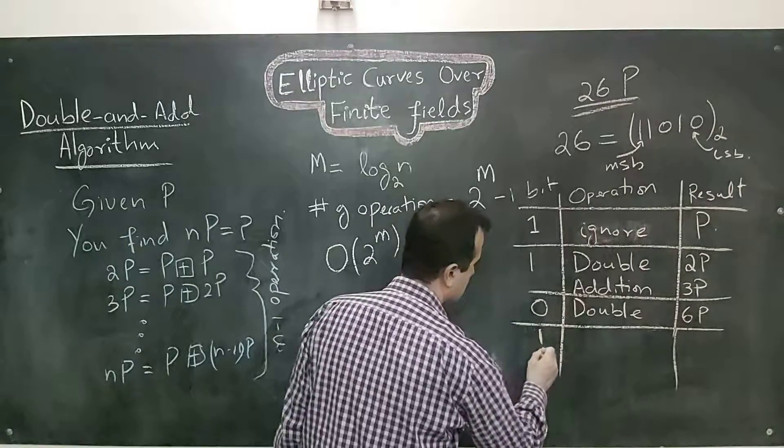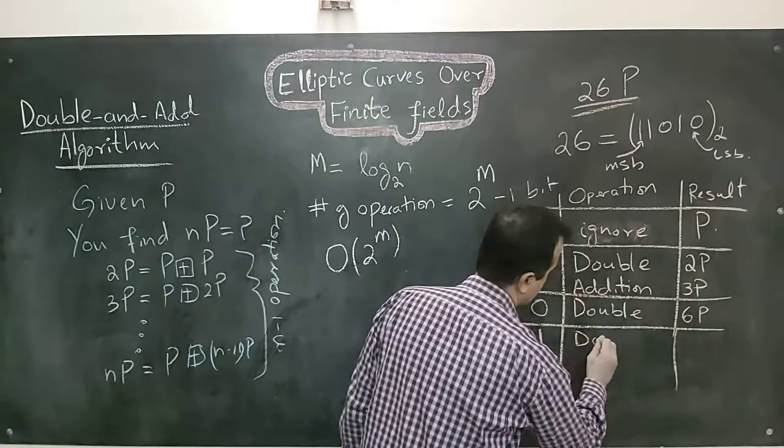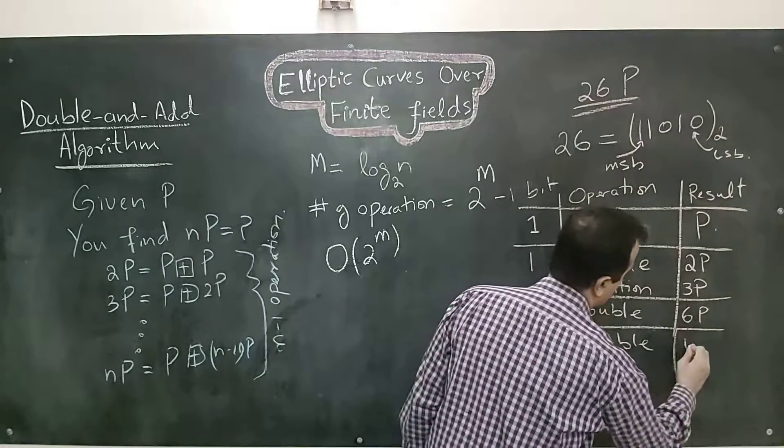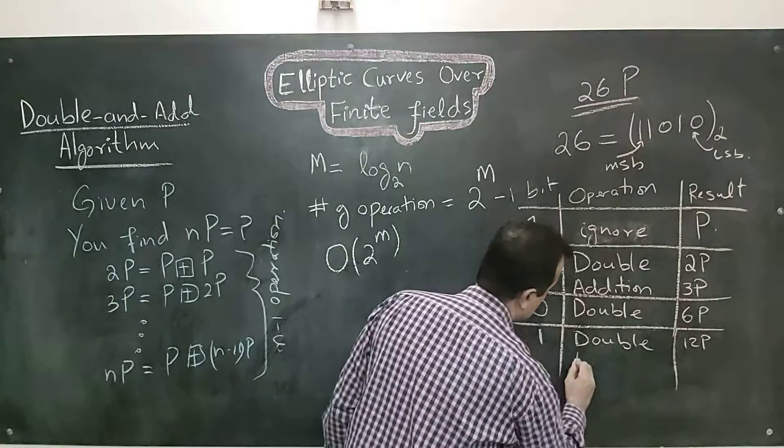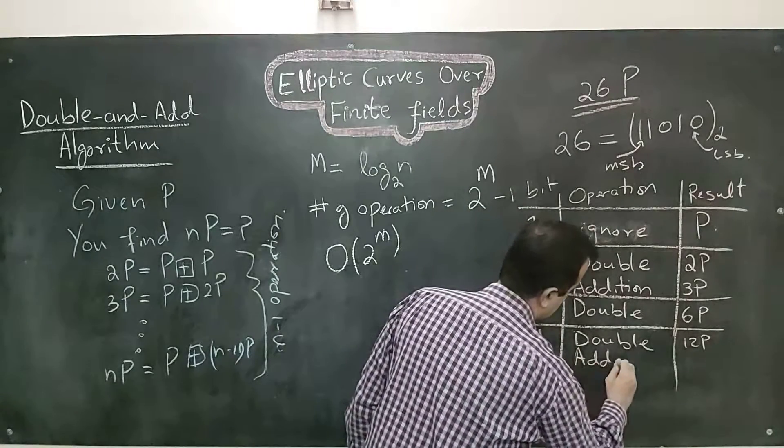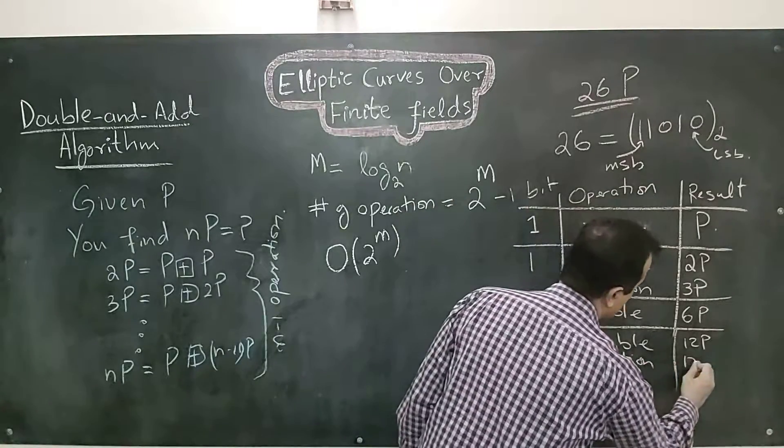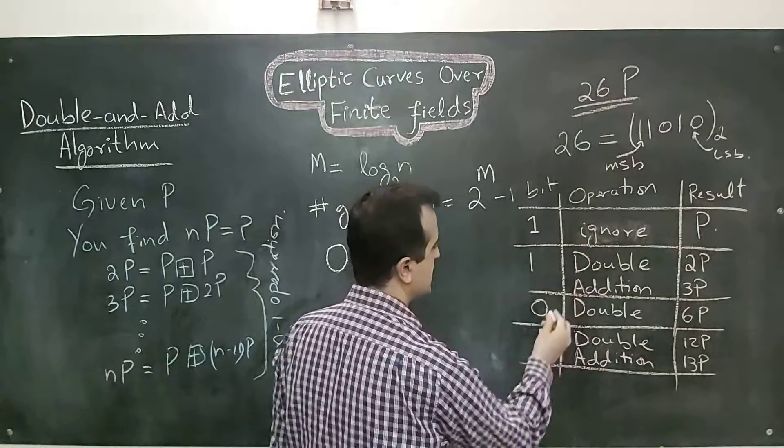The next bit is 1, so I will once again perform 2 operations. First double. I will have 12P. Then I will do the addition operation. 12P plus P is equal to 13P.